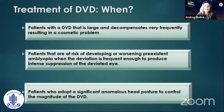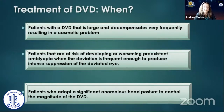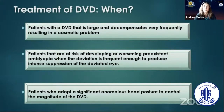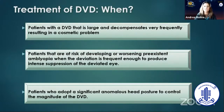So when do we indicate surgery for our patients with DVD? There are three situations where surgery is recommended: patients with a DVD that is large and decompensates very frequently, resulting in a cosmetic problem; patients that are at risk of developing or worsening pre-existing amblyopia when the deviation is frequent enough to produce intense suppression of the deviated eye; and patients who adopt a significant anomalous head posture to control the magnitude of the DVD.